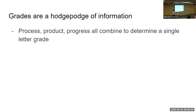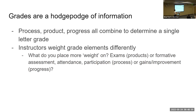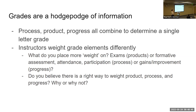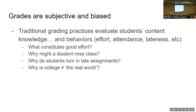Grades are that hodgepodge of process, product, and progress — all combined to create a final grade. When instructors weight grade elements differently, those shifts have significant impacts on student grades. Some questions to think about: What do you place more weight on — exams and products, formative assessment and participation, or gains and improvement? Do you believe there is a right way to weight product, process, and progress? And does the final grade accurately reflect a student's knowledge or skills at the end of the course?